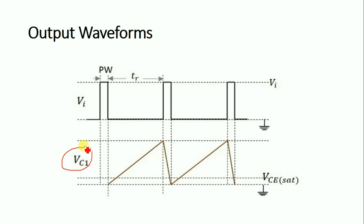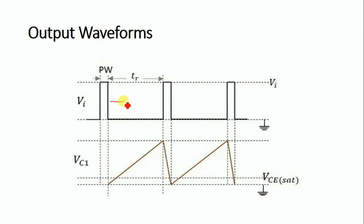The voltage VC1 appears across capacitor C1. The triggering pulse is applied at the base of transistor Q1 to turn it on and off. The turn-off time of Q1 allows capacitor C1 to charge to maximum voltage up to VCC. The turn-on time of transistor Q1 is very short, and during this time the capacitor discharges rapidly, so the ramp signal is generated at the output.